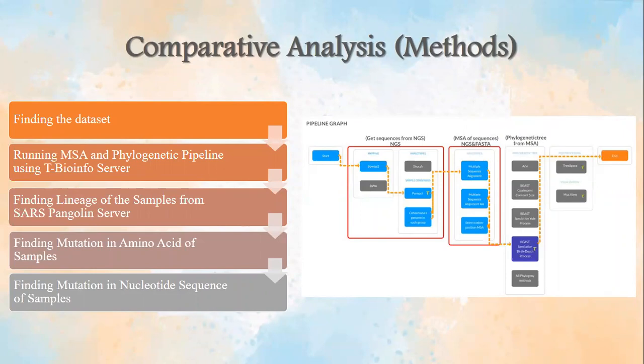For starting our project, we need to follow five steps. The first step is finding the dataset, which we discussed earlier — we downloaded the SRA run table from the NCBI bioproject. The second step is running MSA and the phylogenetic pipeline using the T-BioInfo server. The figure shows the pipeline graph which we used.